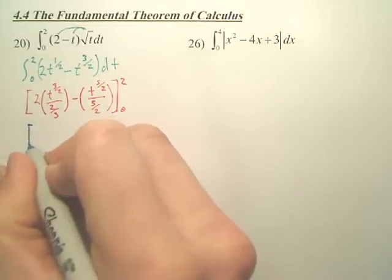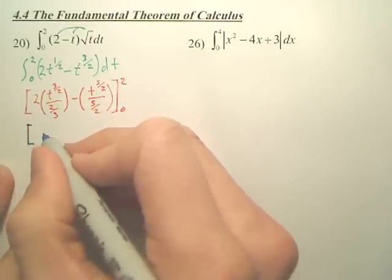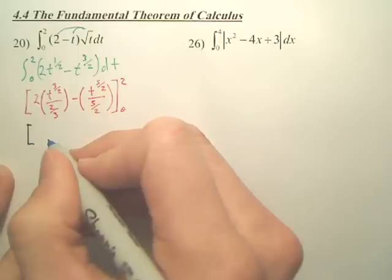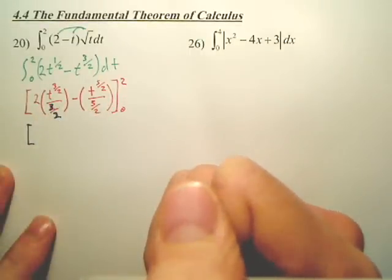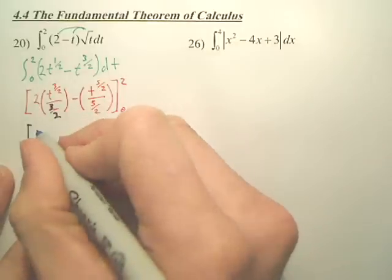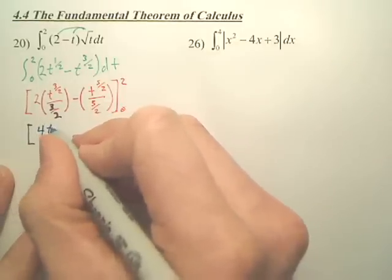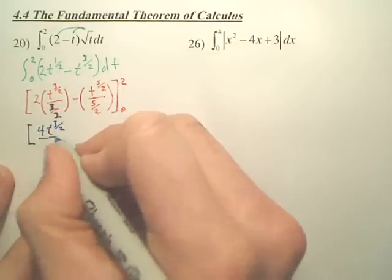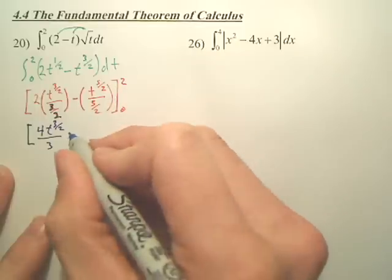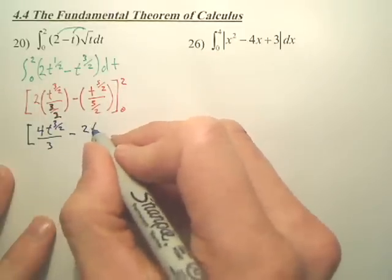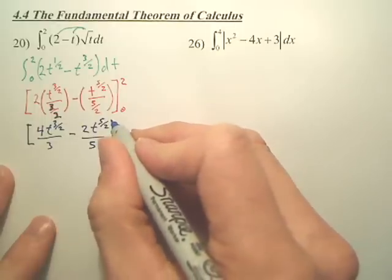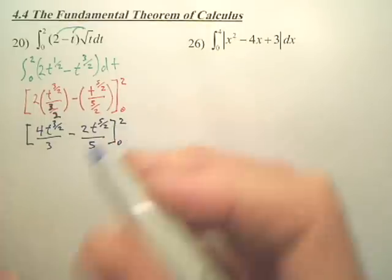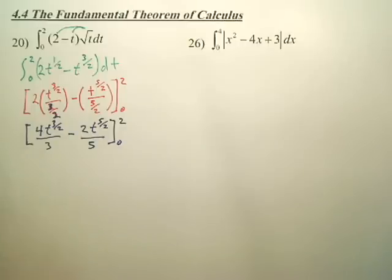Could I actually simplify this? Isn't that going to be t over 3? Actually, it takes 3 over 2. Yeah, that's a 3 over 2, correct? Which makes this 4t to the 3 over 2 over 3 minus 2t to the 5 over 2 over 5. Okay, made a little mistake there.